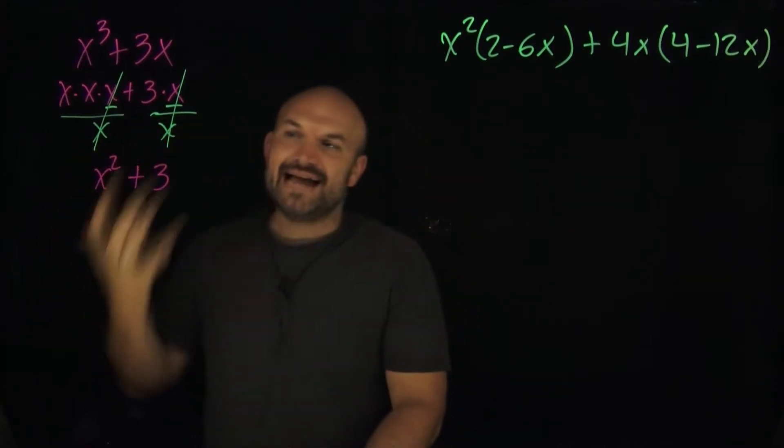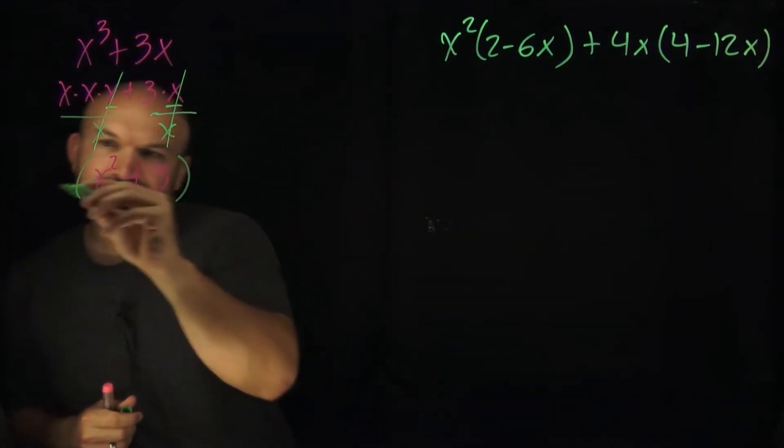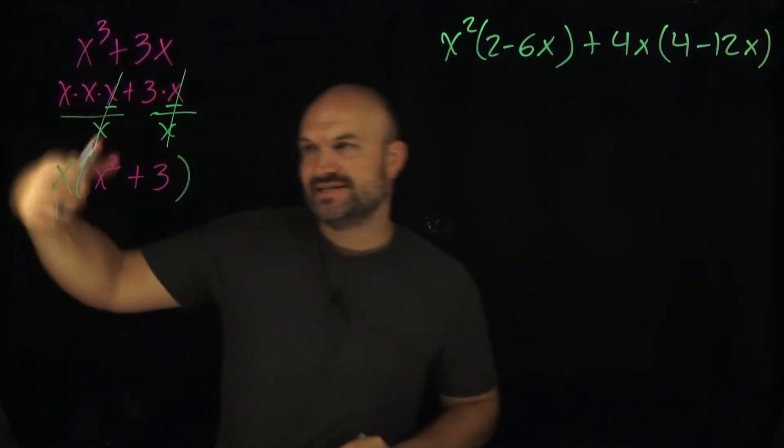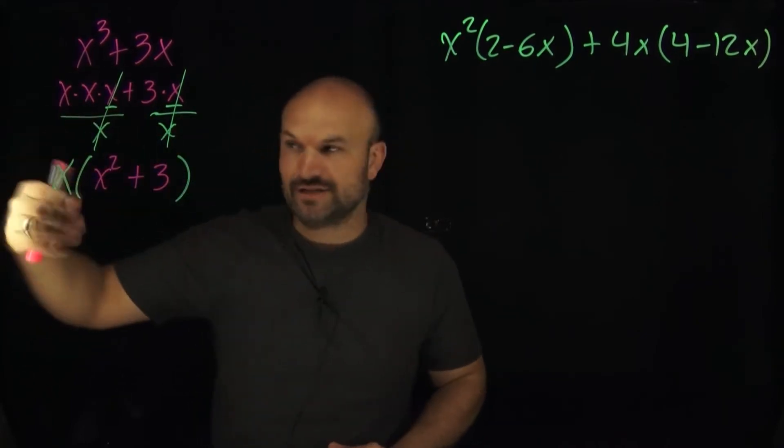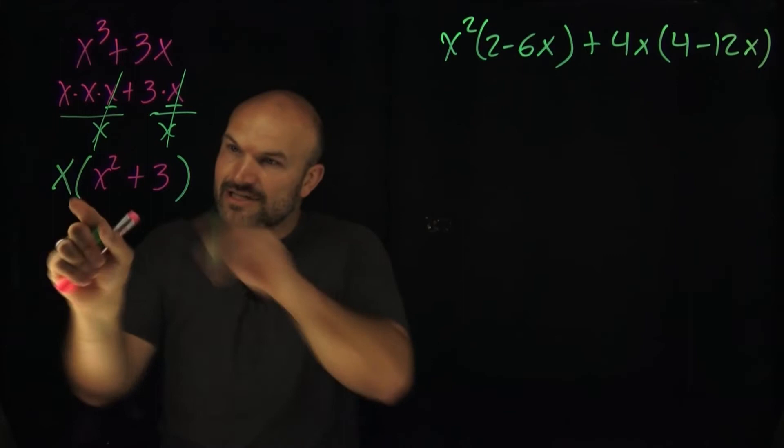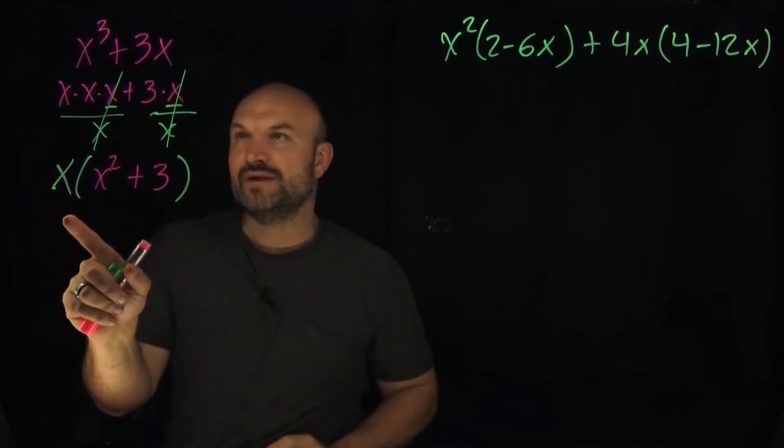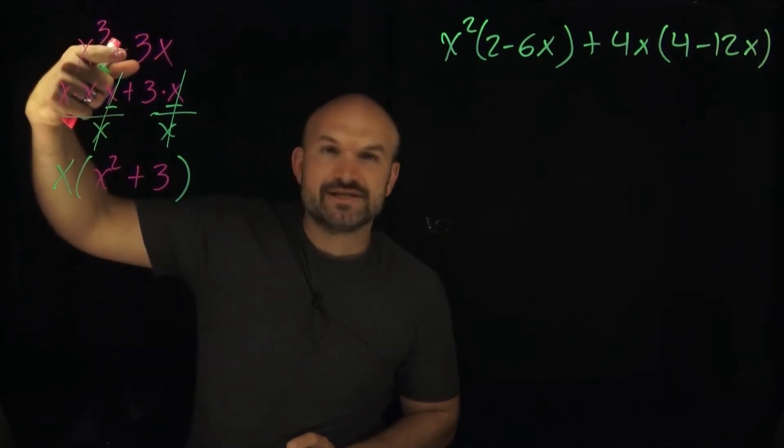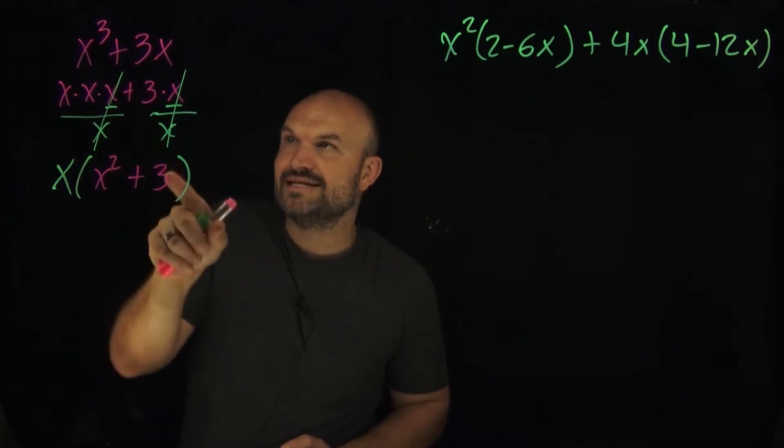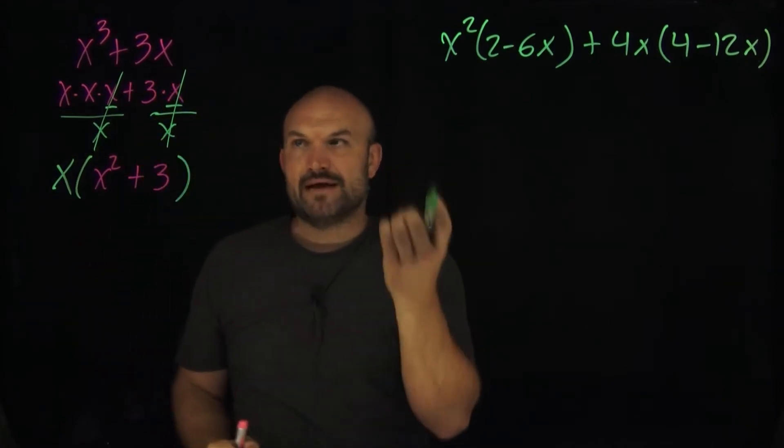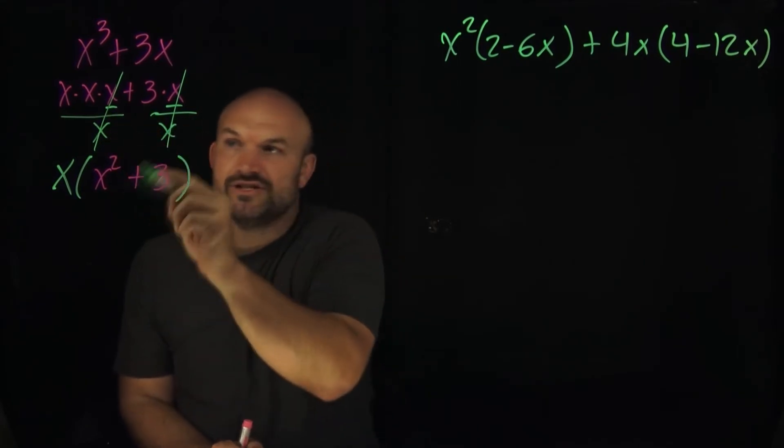When we divide it out, we're rewriting it as multiplication. So that x is going to go right here, because the inverse operation of division is multiplication. By dividing out the x, you now have created an expression that is equivalent to your original expression. The difference is this is written as multiplication and this is written as addition. You can always check your work: x times x squared is x cubed, x times 3 is 3x.